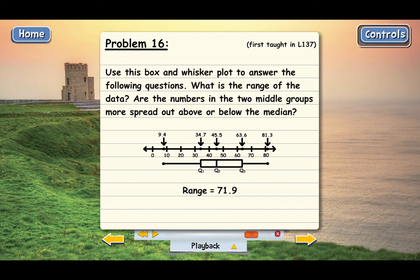We know that the numbers in the two middle groups of data are going to be more spread out above the median. Because we have the same number of terms here, in a greater distance than we do here.